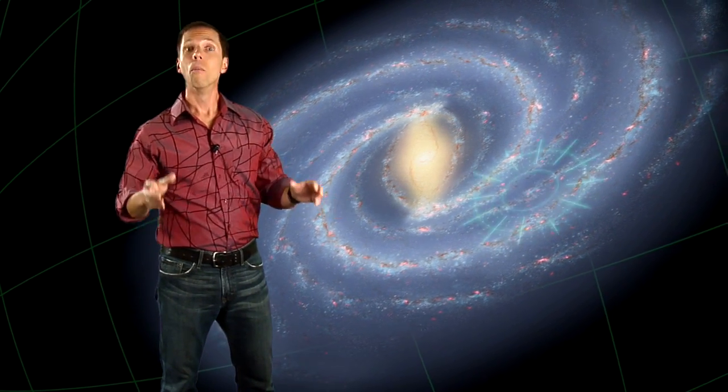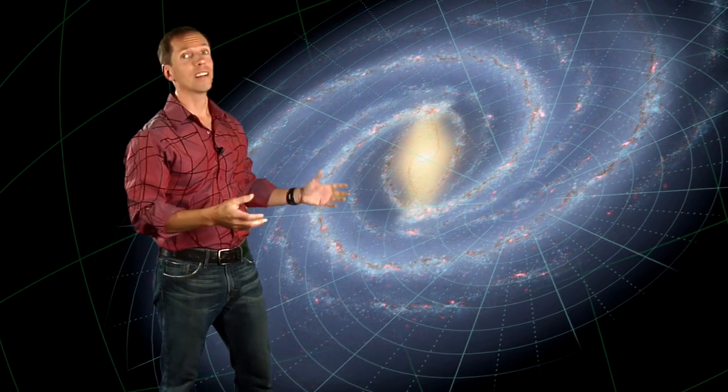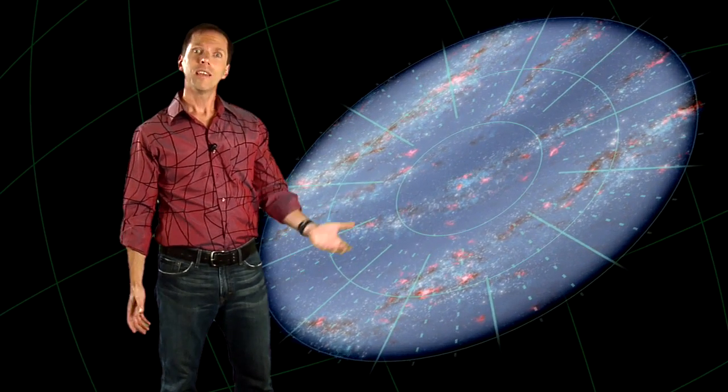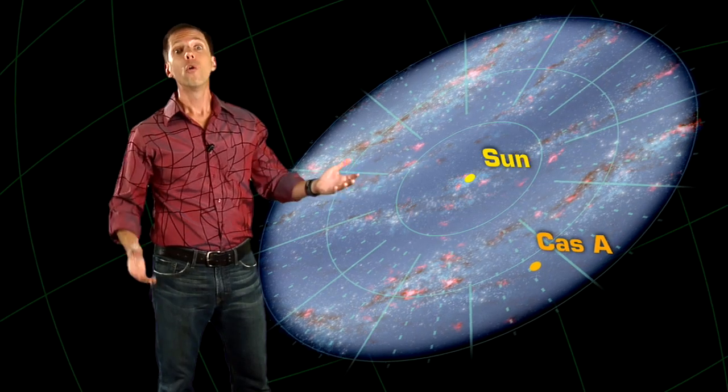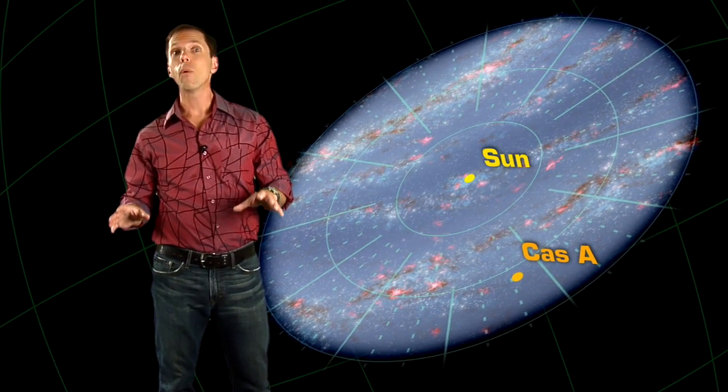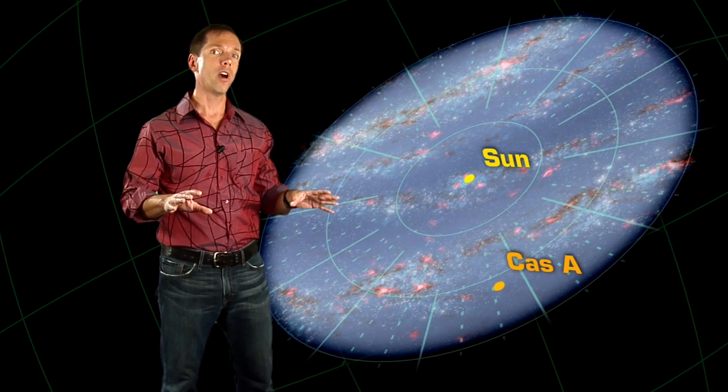To get to what's happening, we have to remember that light is fast. But in such a huge galaxy, it still takes a while for it to get anywhere. Cass A is 11,000 light years away, which means that we're seeing it today the way it was 11,000 years ago.